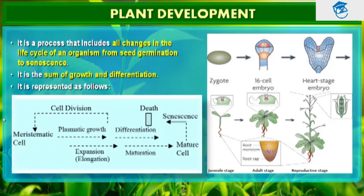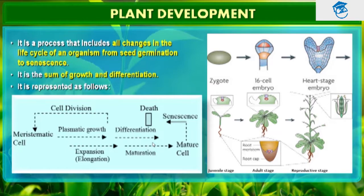Meristematic cells are those which keep on dividing under plasmatic growth, and because they divide continuously they also differentiate. Differentiation means cells derived from the root apical and shoot apical meristem and cambium differentiate and mature to perform a specific function — that leads to maturation which we call differentiation. And thus it leads to mature cells and ultimately to death of the cell, which we call senescence.